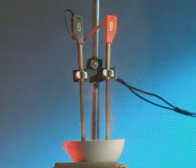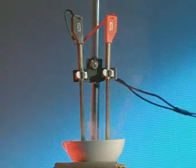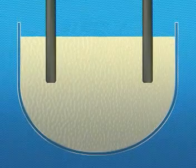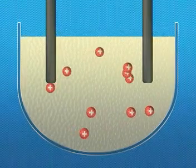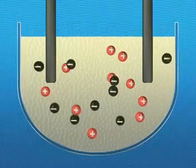To work out why this happens, imagine you can see the charged particles, the ions, in the compound. There are positive lead ions and negative bromide ions.